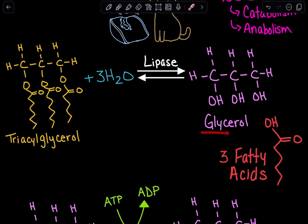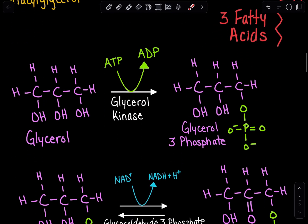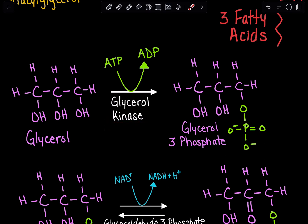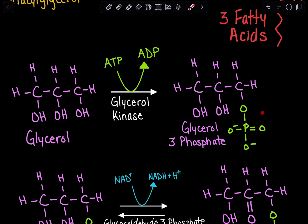Now let's take a look at what happens to this glycerol. The first step in glycerol breakdown is phosphorylation via a kinase. When we're using a kinase, we're going to be using ATP and ADP — it's a phosphorylation reaction because kinases are responsible for transferring a phosphate group. ATP is converted to ADP as we take one of those phosphates and add it to the third carbon of glycerol to get glycerol-3-phosphate.